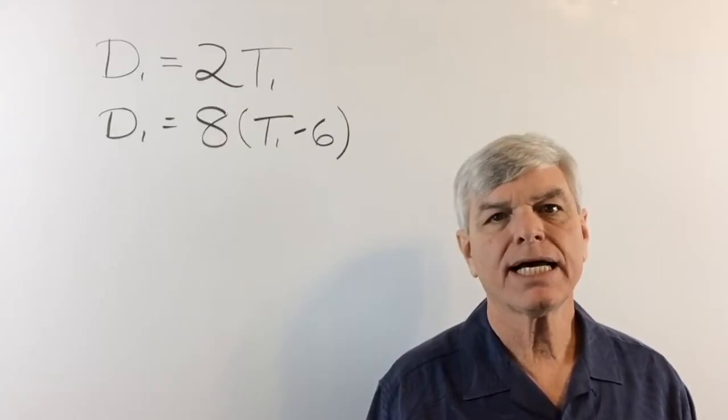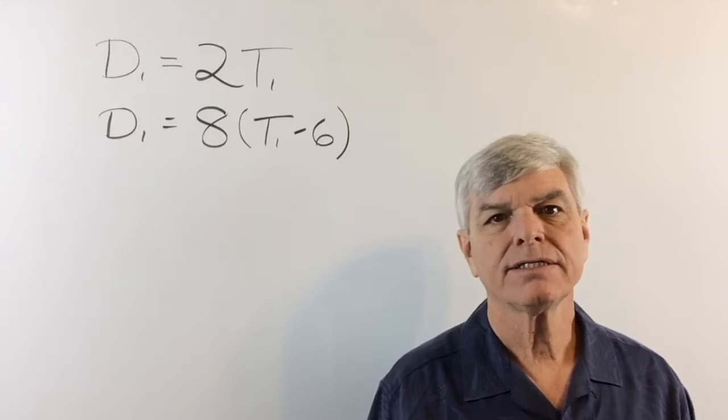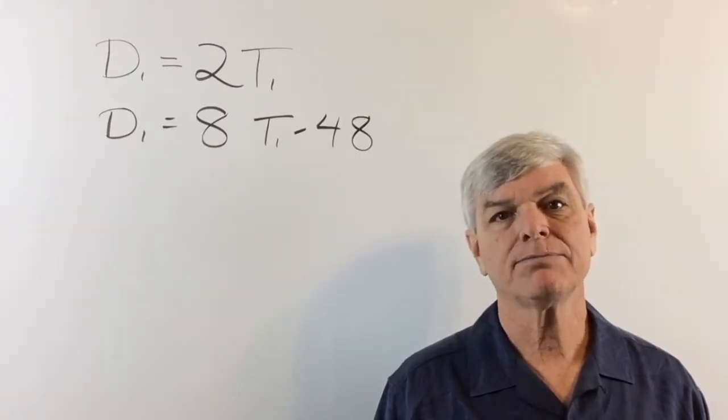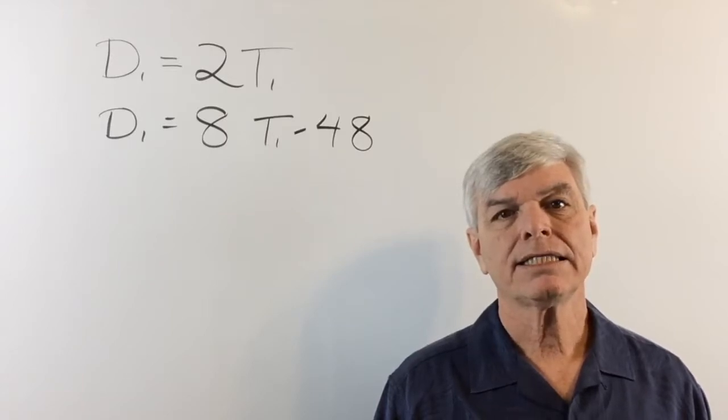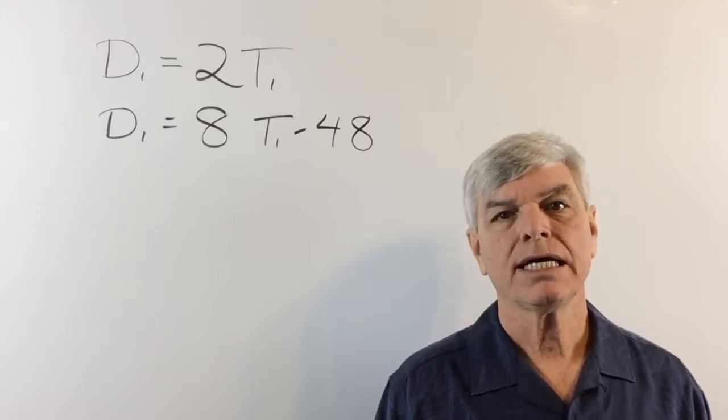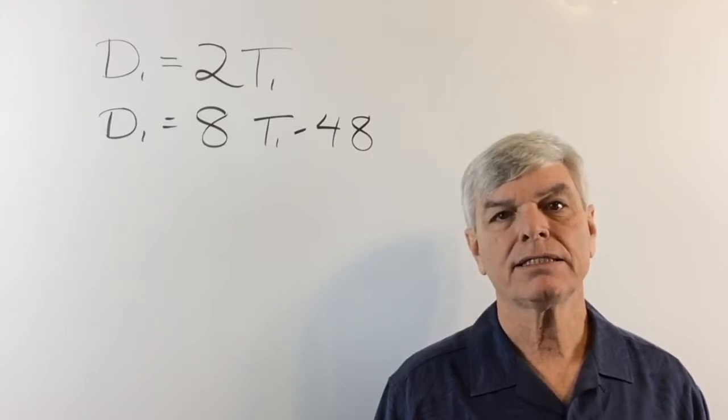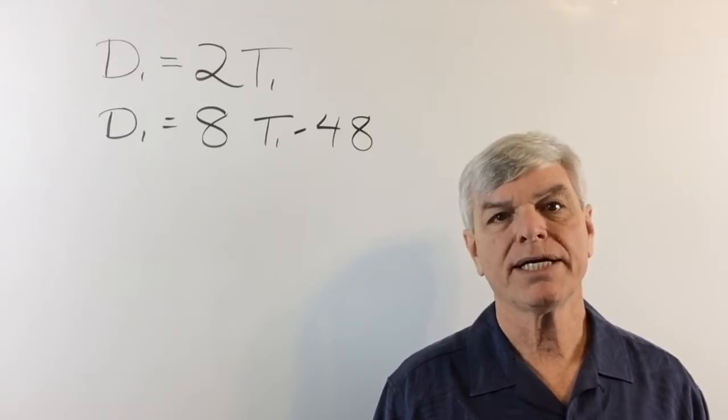Let's take that second formula out of the parenthesis. Make sure you multiply it times both terms in the parenthesis. And let's insert D1 equals 2 times T1 into the second formula. So D1 is going to become 2 times T1. Do you see that?